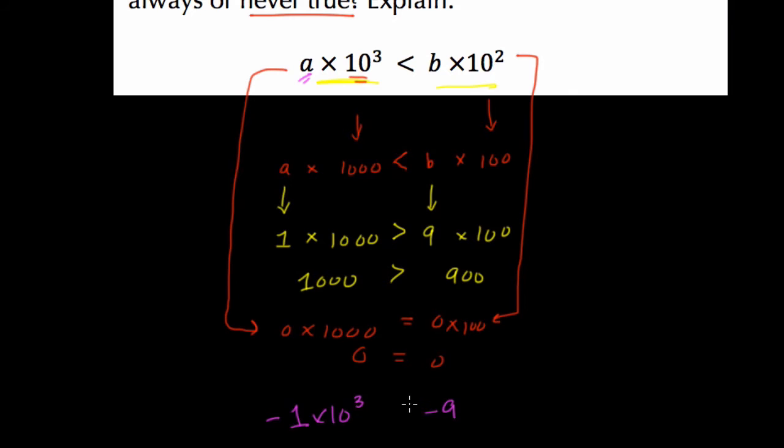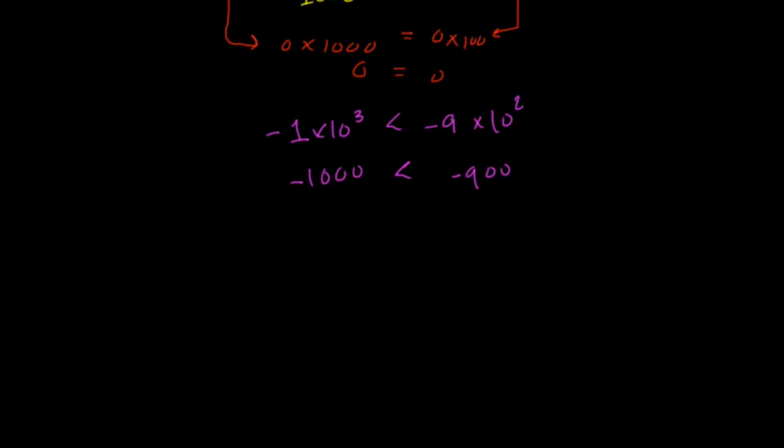Well, we have negative 1 times 10 to the third versus negative 9 times 10 squared. That means negative 1 times 10 to the third is negative 1,000. And negative 9 times 10 squared is negative 900. Which number is larger? Well, negative 900 is larger. Let's try some more examples if we're not convinced.